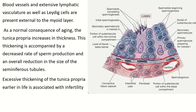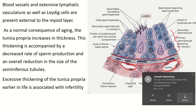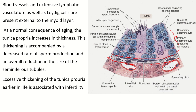In a normal aging process, the thickness of the tunica propria increases, which decreases the production of spermatogenic cells and also reduces the size of the seminiferous tubule. Excessive thickening of the tunica propria in early life causes infertility.